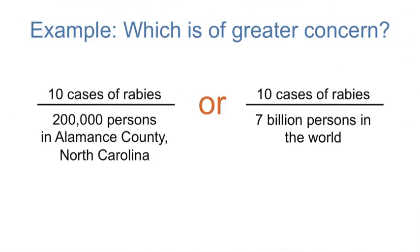We have seen how important the time period is when determining a prevalence. Consider two prevalence statistics and think about which is of greater concern. What is the timeframe? Are we talking about new or old cases? Is all the needed information provided? For example, Alamance County cases may have occurred over the past century — anyone who ever had rabies over the past hundred years — so concern for today may be minimal. In contrast, if the global measure is 10 new cases of rabies in a day, we would be more concerned about new cases than a historical record of existing cases. We need to be specific about what information we're reporting to avoid this confusion.